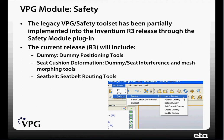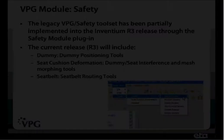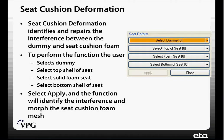What I want to talk to you about today is the seat cushion deformation tools. What this does is identify and repair the interference between the dummy and seat cushion foam. So when you put your dummy in the model and the foam of the seat is undeformed, it will identify that interference and then morph the mesh into place.